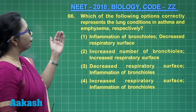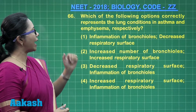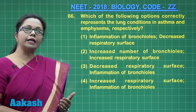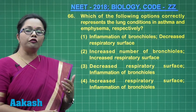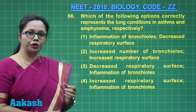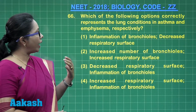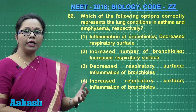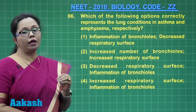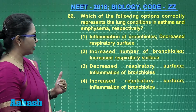Question 66: Which of the following options correctly represents the lung conditions asthma and emphysema respectively? Asthma is an allergic disorder in which histamine is released causing constriction in the bronchioles and inflammation. Emphysema is a chronic disease of smokers where the alveoli are damaged, leading to a decrease in the surface area for gas exchange.